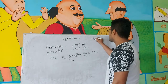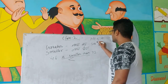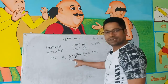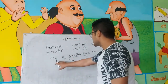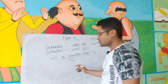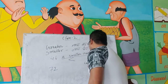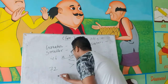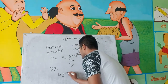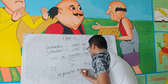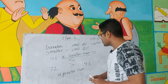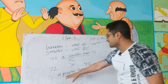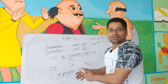वैसे ही is smaller than का चिन होता है जो पीछे की तरफ मुड़ा रहेगा. तो 46 is smaller than 72. अगर 72 पहले हो और 46 बाद में, तो हम चिन बदल देंगे — 72 is greater than 46. तीर जब इधर की तरफ मुड़ा — is greater than. तीर जब पीछे की तरफ मुड़ा — is smaller than.